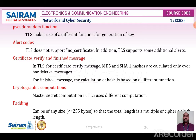The PRF takes an input secret value, a label, and a seed value, producing an output of arbitrary length to generate the pseudo-random function. The next difference is alert codes.